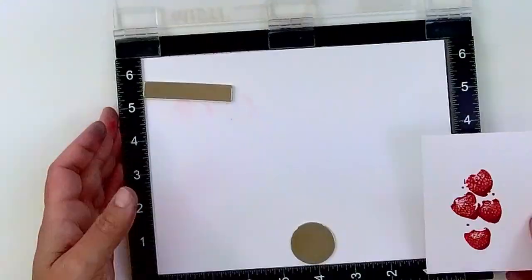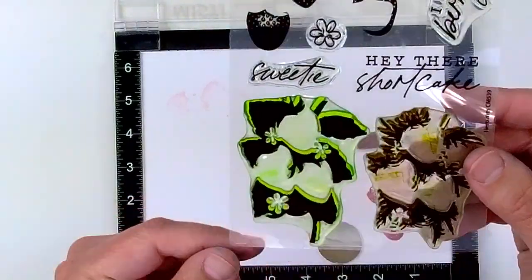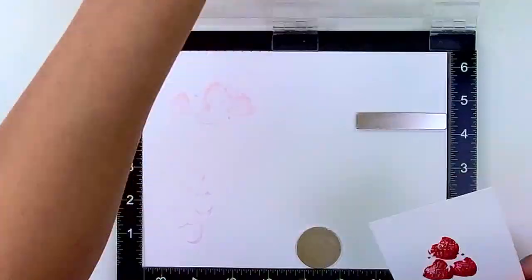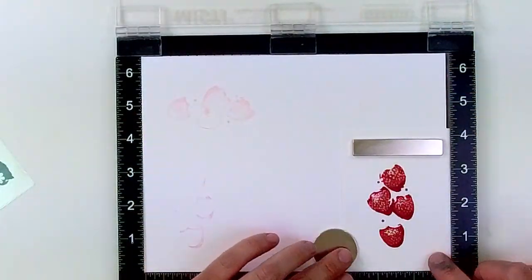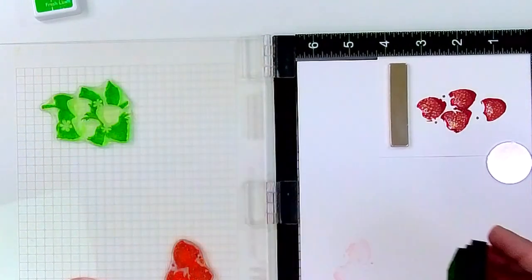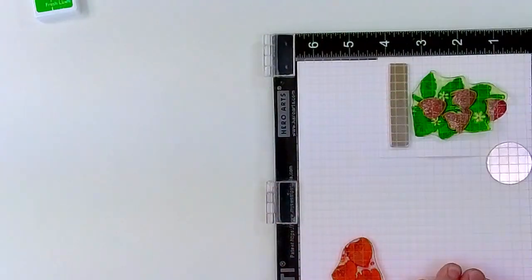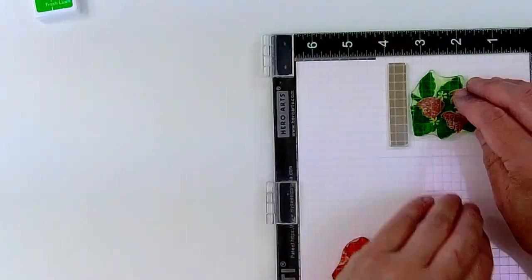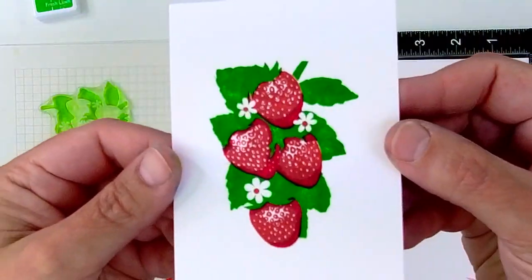So now I've got my strawberries completed and I'm moving on to the background stamp for the leaves, which I will stamp in Fresh Lawn, which is the lighter of the two green colors. So I'm stamping the backgrounds in the lighter colors, and the detailed stamps are being stamped in the darker ink colors to show the shadow and the definition.